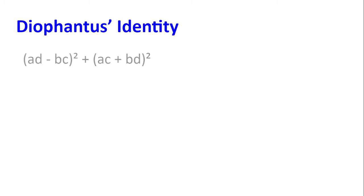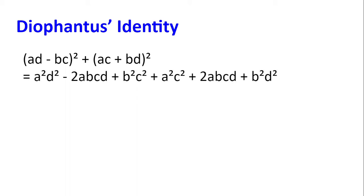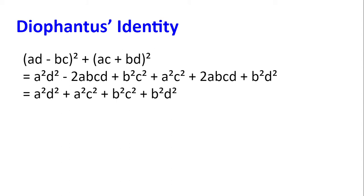Now we will go through Diophantus' identity. Suppose we have an expression of the form (ad minus bc) squared plus (ac plus bd) squared. Expanding the brackets, we get a squared d squared minus 2abcd plus b squared c squared for the first bracket, and a squared c squared plus 2abcd plus b squared d squared for the second bracket. Tidying this up gives a squared d squared plus a squared c squared plus b squared c squared plus b squared d squared.